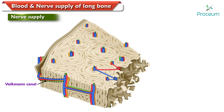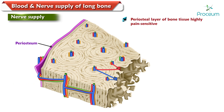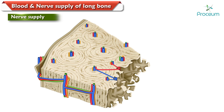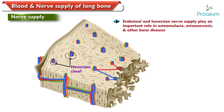While the Volkman's canals of the shaft receive nerve fibers from the overlying periosteum, the periosteal layer of bone tissue is highly pain sensitive and an important cause of pain in several disease conditions causing bone pain, like fractures and osteoarthritis. However, in certain diseases, the endosteal and Haversian nerve supply seems to play an important role — for example, in osteomalacia, osteonecrosis, and other bone diseases. Thus, there are several types of bone pain, each with many potential sources or origins of cause.